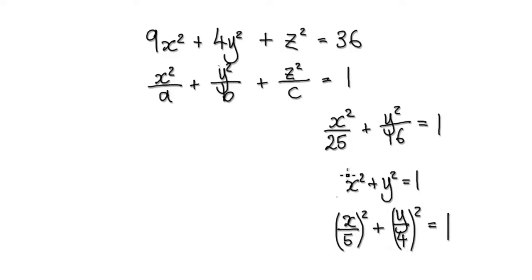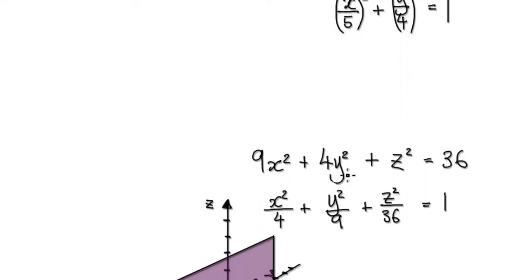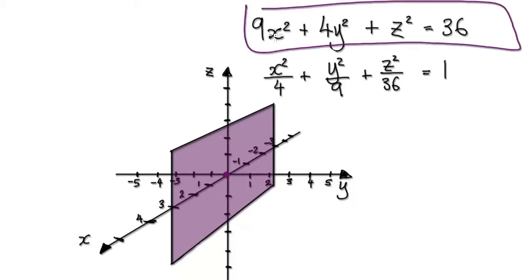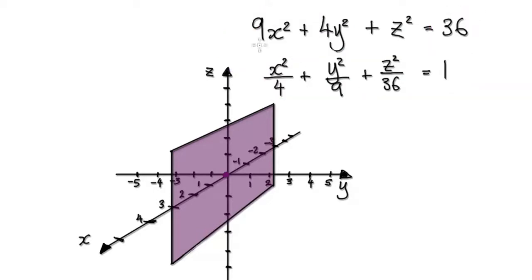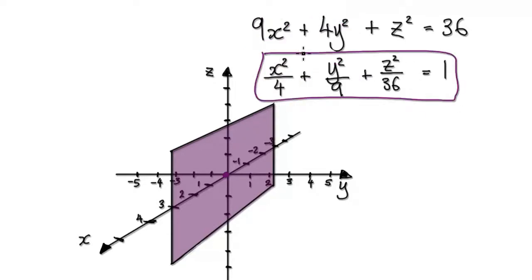So let's start again. We are trying to sketch this in 3D space. Rewrite this in our standard form — divide everything by 36. Divide this by 36 and simplify, that will give you this. Divide this by 36, simplify, that will give you this, and so on, until we get to the standard form.